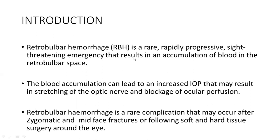Retrobulbar hemorrhage is a rare, rapidly progressive, sight-threatening emergency that results in accumulation of blood in the retrobulbar space. This blood accumulation can lead to increased intra-orbital pressure, which in turn leads to stretching of the optic nerve and blockage of ocular perfusion, resulting in permanent blindness.